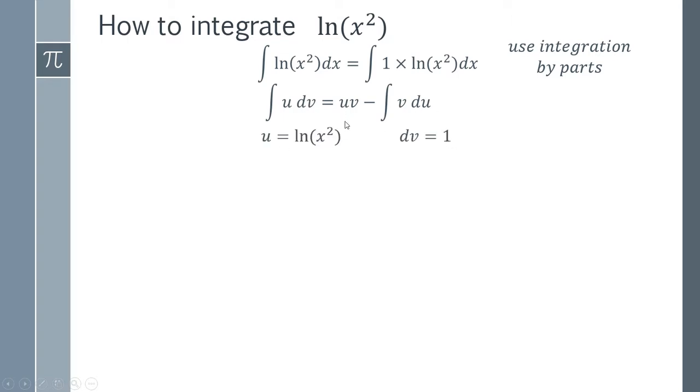Now we've got u and we've got dv, we also need to have v and we need to have du. So let's start by getting du. We have this expression here and we have to find the derivative. To do this you're going to have to use the chain rule.